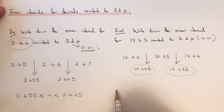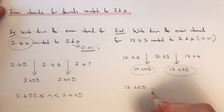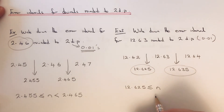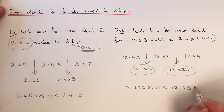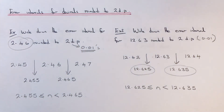We've got our lower bound and upper bound, so we can now write down the error interval: 12.625, then a less-than-or-equal-to sign, then the letter n, then a less-than sign, then the upper bound 12.635. If you like this video make sure you like and subscribe, and I'll see you next time, bye bye!